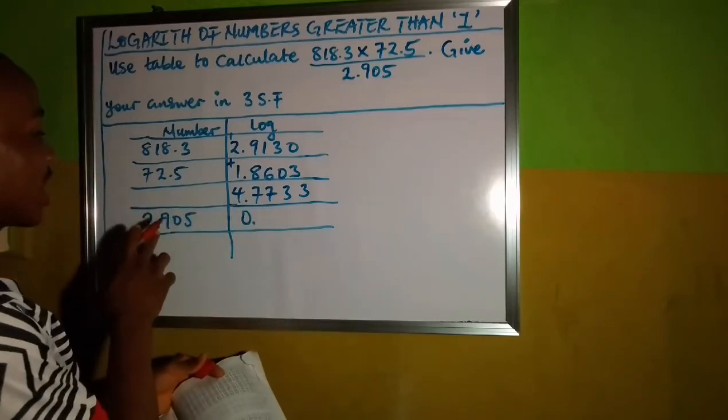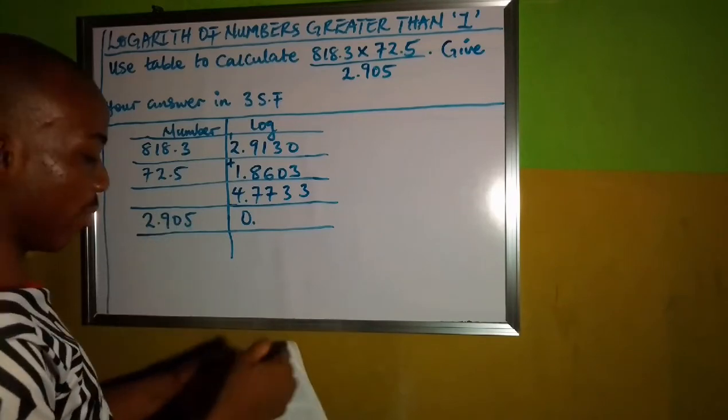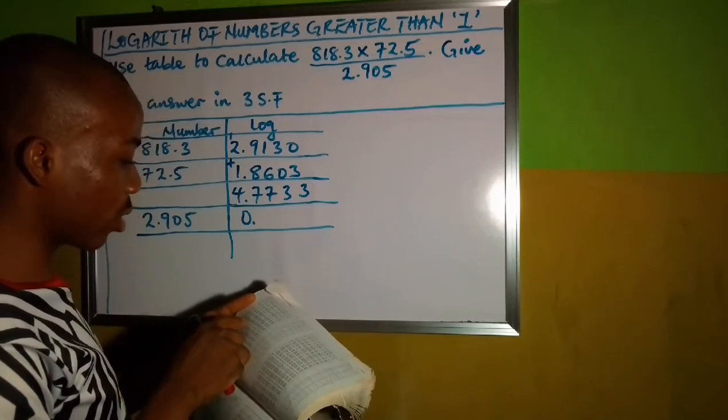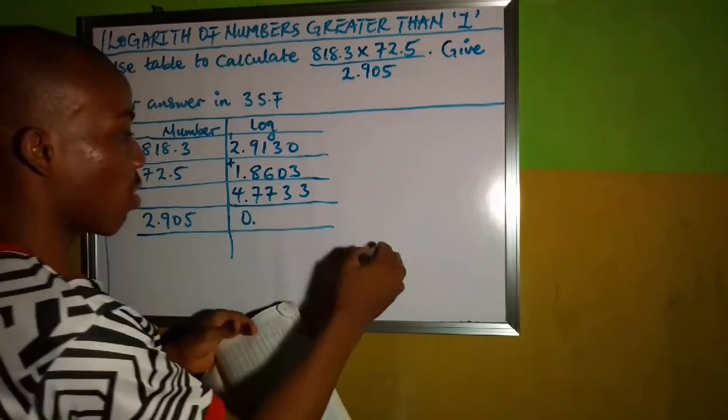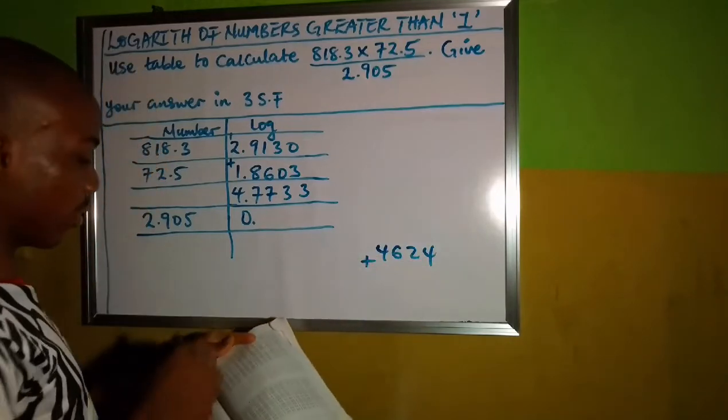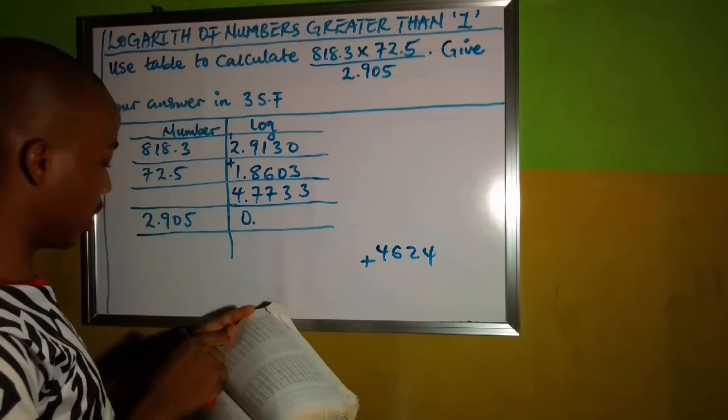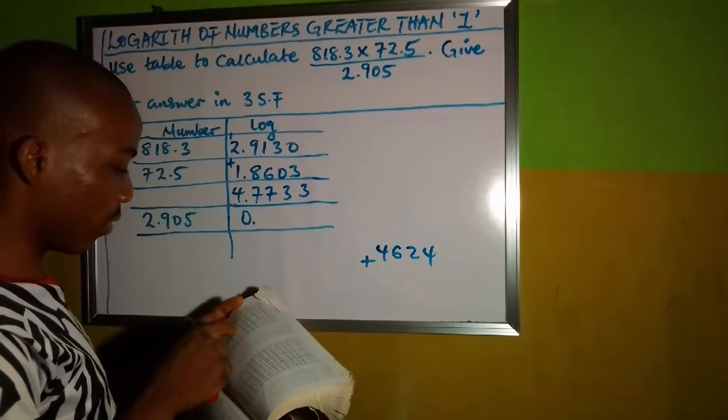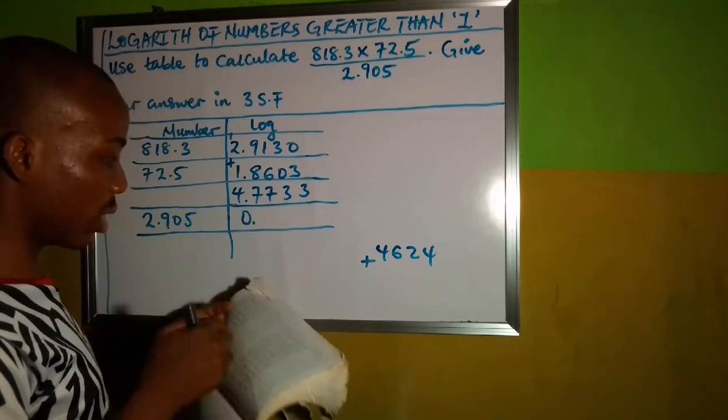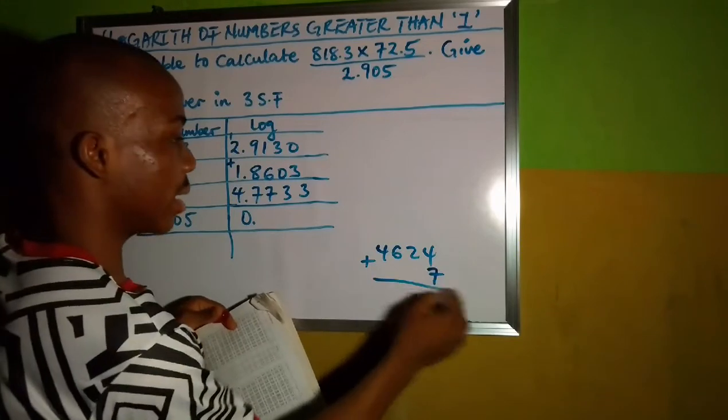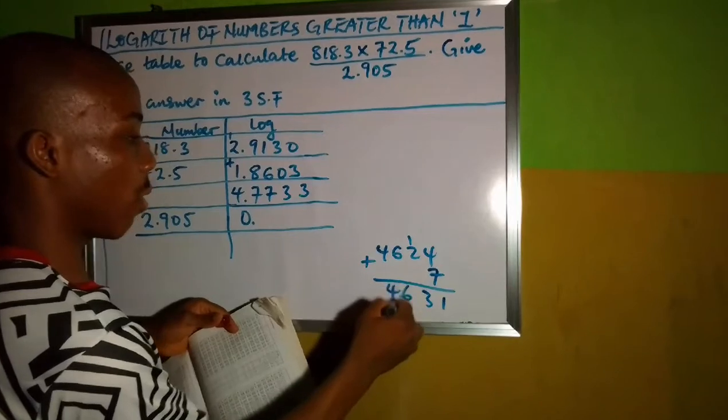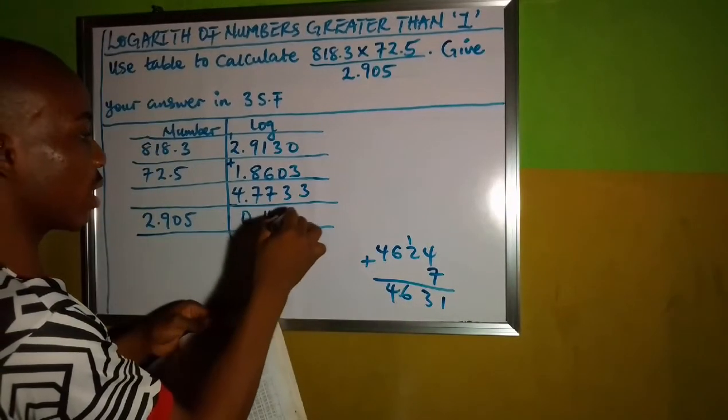So what I will check next now will be 29 under 0 and difference of 5. 29 under 0 is 4,624. Now let's add the difference. Difference of 5 gives us 7. So let me add. 7 plus 4 is 11. This gives us 4,631.